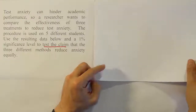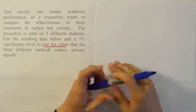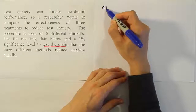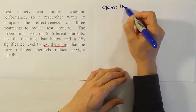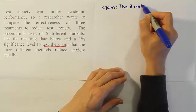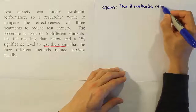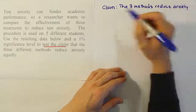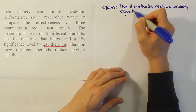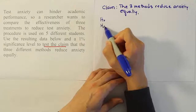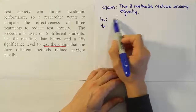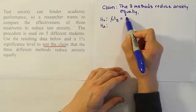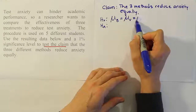The claim is that the three different methods reduce anxiety equally. In words: the three methods reduce anxiety equally. H₀ is basically equivalent to the claim — H₀ says that all the means for the three treatments are the same: the mean for beta blockers equals the mean for valerian root equals the mean for meditation.